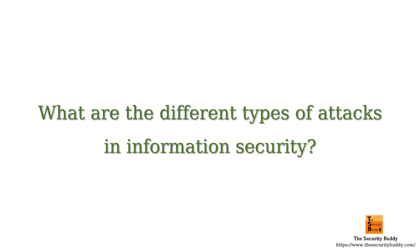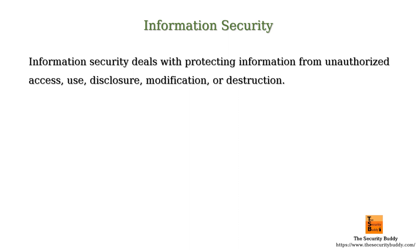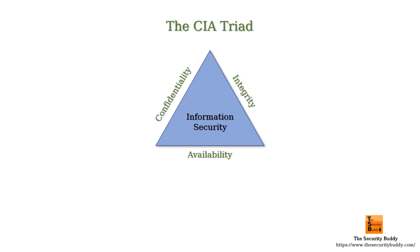What are the different types of attacks in information security? In this video, we will try to understand that. Information security deals with protecting information from unauthorized access, use, disclosure, modification or destruction. And we use the CIA triad when we discuss information security.